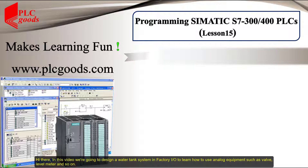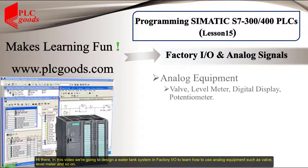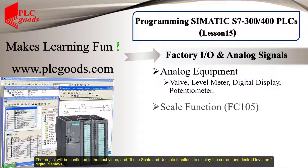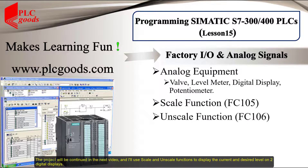In this video, we are going to design a water tank system in Factory I/O to learn how to use analog equipment such as rack level meters and so on. The project will be continued in the next video, where I'll use scale and unscale functions to display the current and desired level on two digital displays.